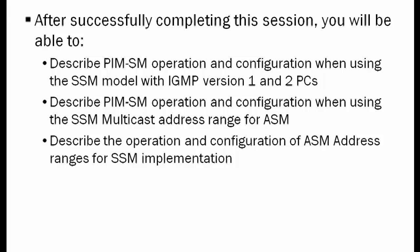In this particular learning bite, I'd like to talk about how PCs that are only capable of supporting IGMP version 1 or 2 can participate in a source-specific multicast model. I'd also like to cover how, if we have a shortage of source-specific multicast addresses, we can share those in the any-source multicast address space, and vice versa — how we can share any-source multicast address space when there is scarcity from the source-specific multicast space.